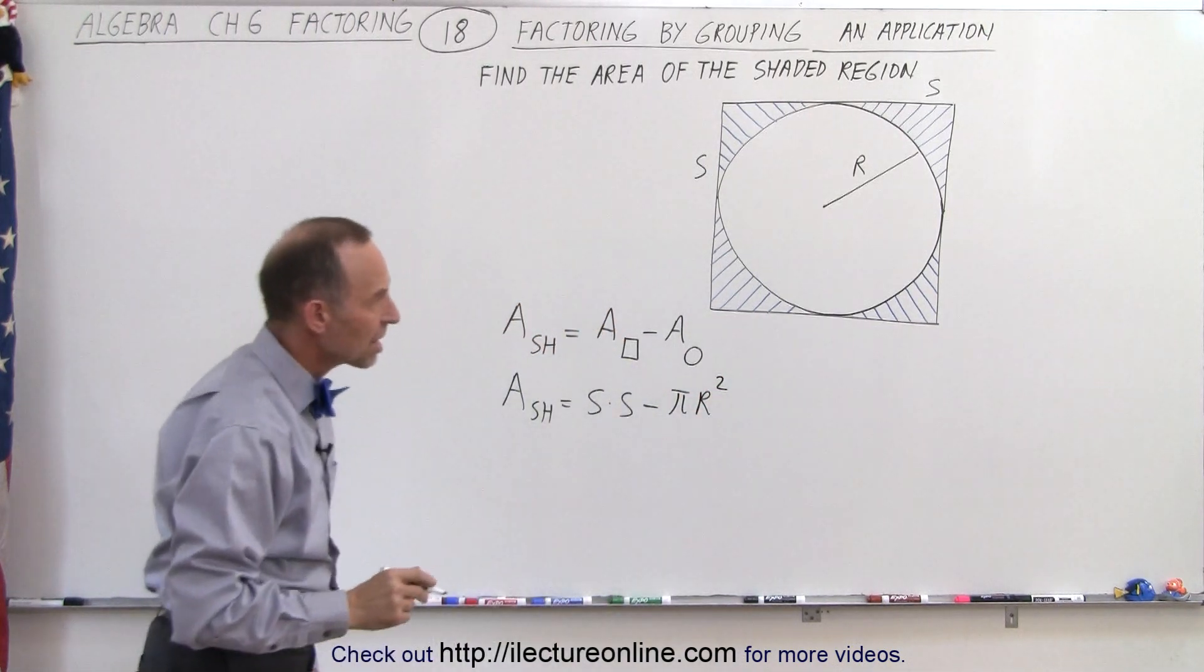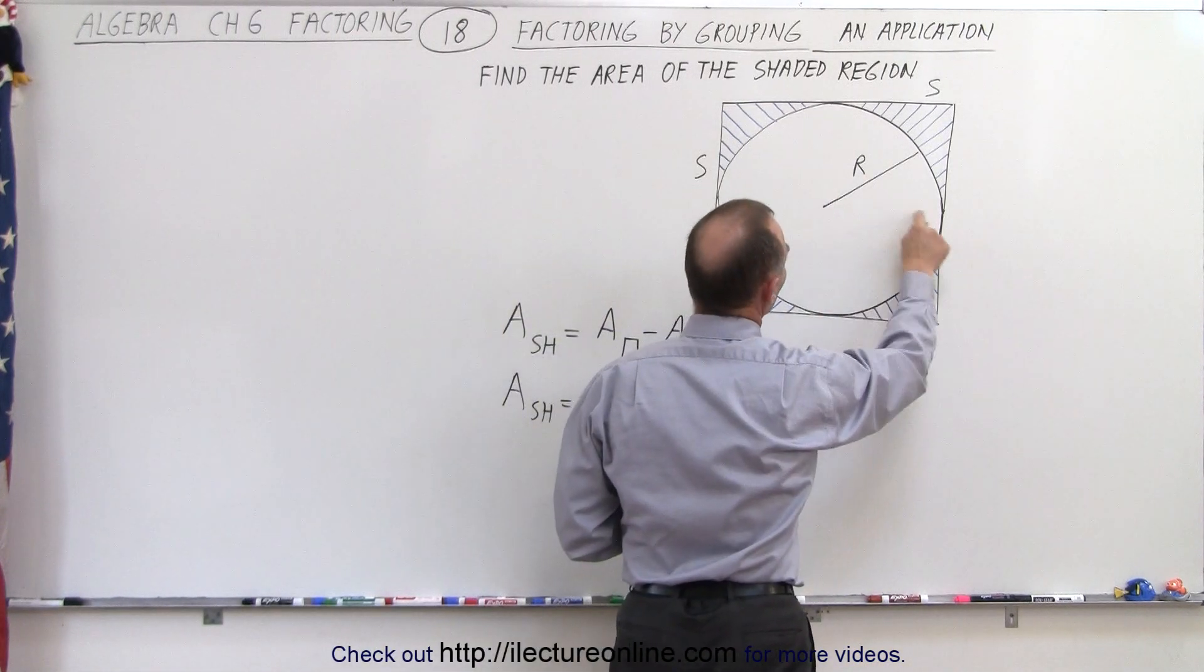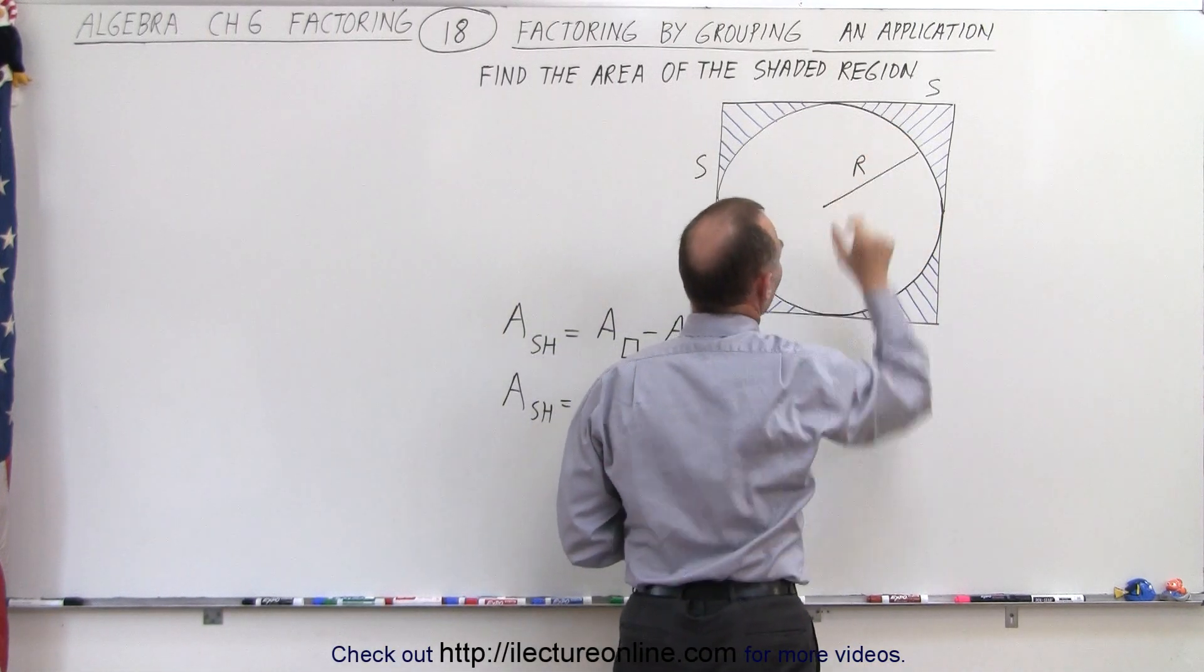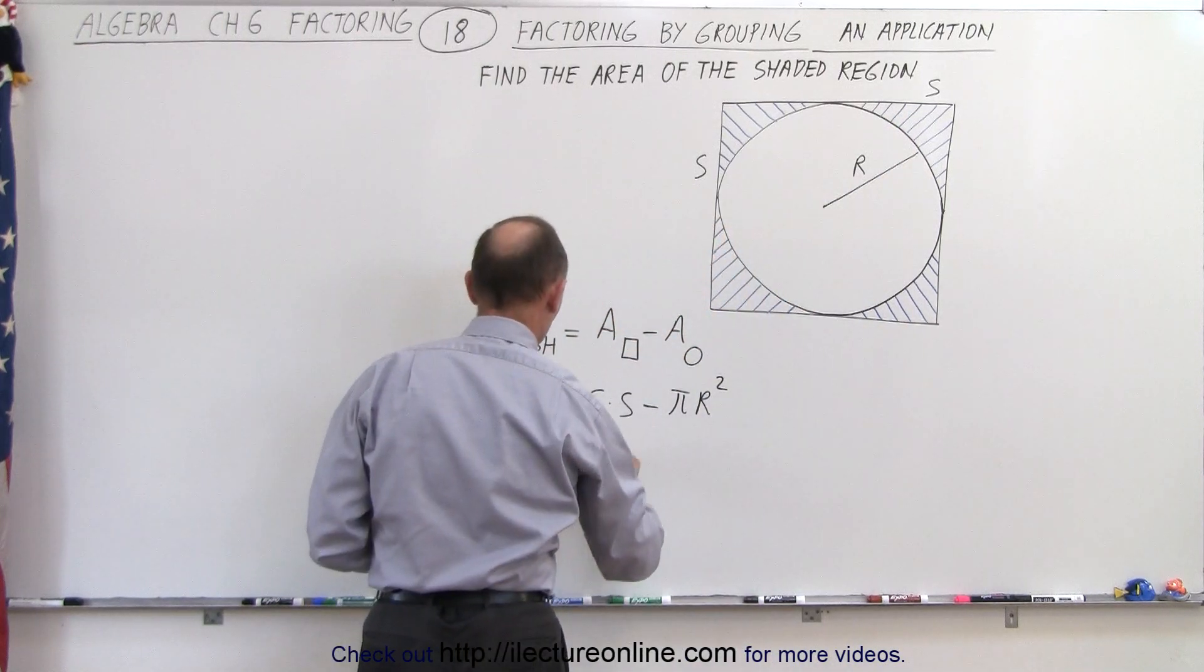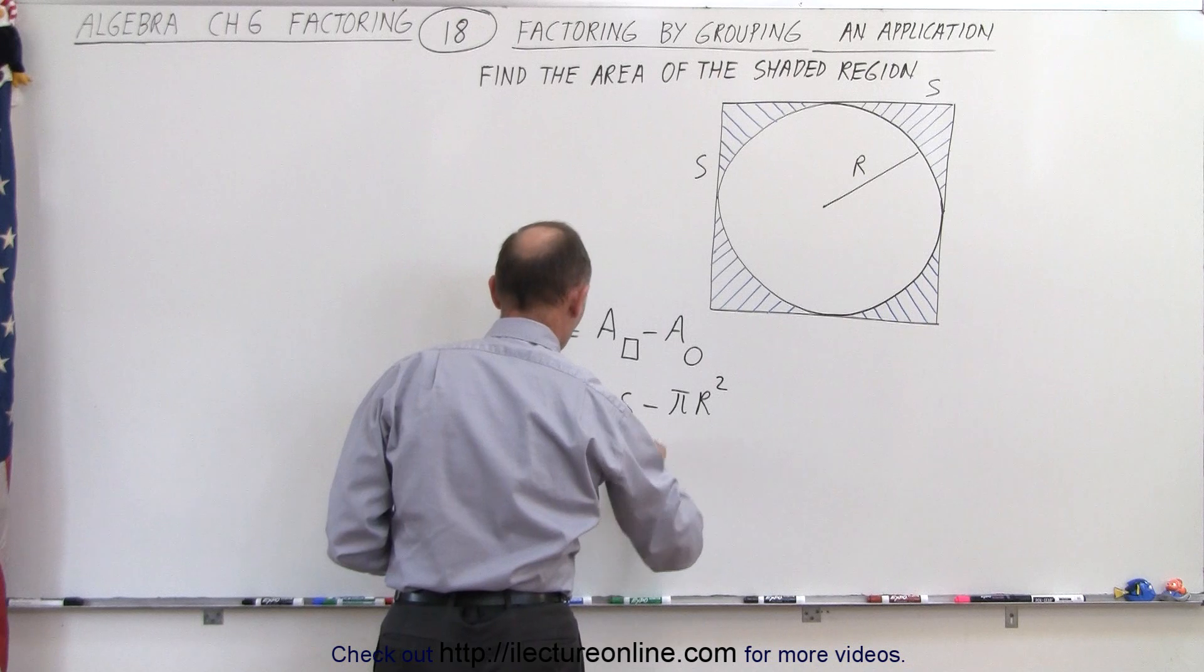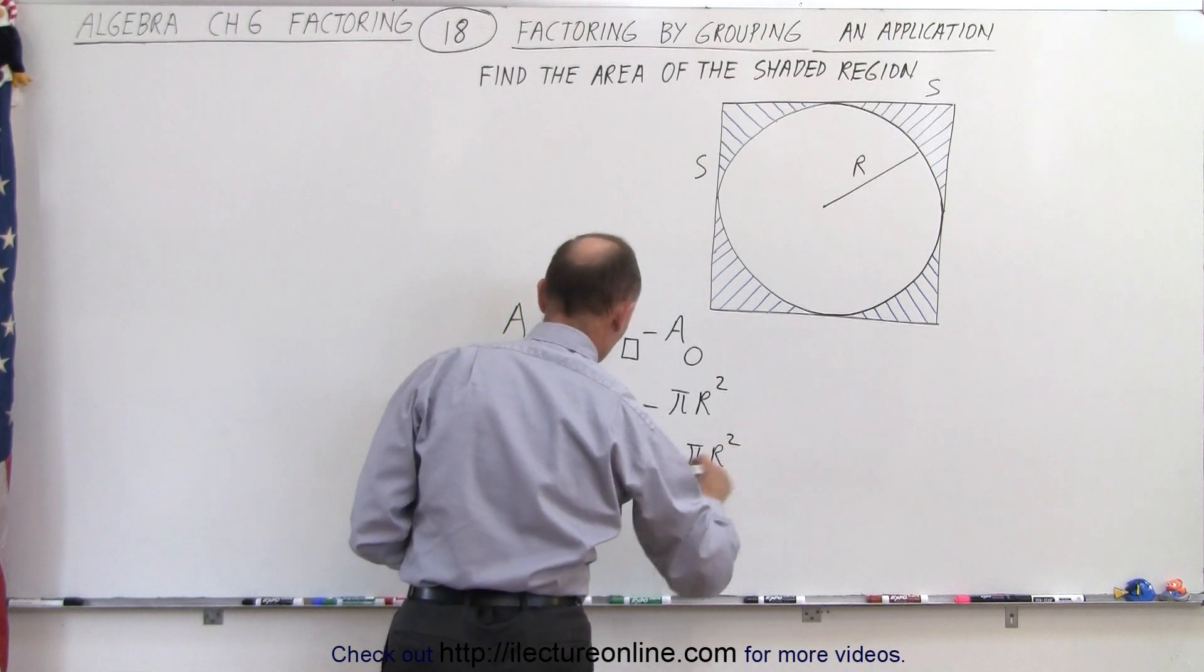Now we can see that when we take the radius from there to there, that's exactly equal to half S. So S would be 2 times R, which means that this would be 2 times R, multiplied times 2 times R, minus pi times R squared.